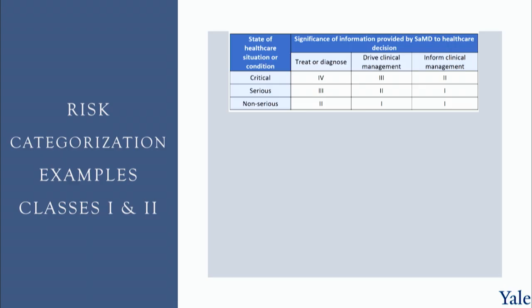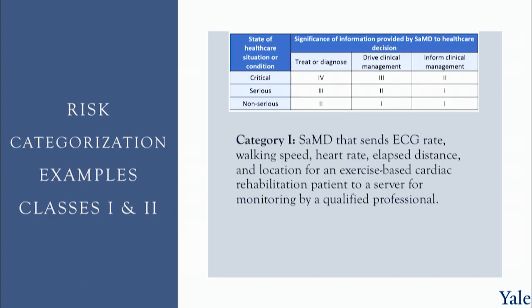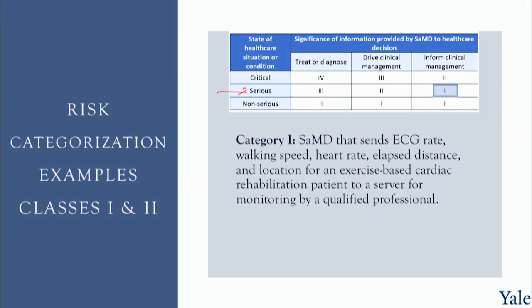Here is a Class 1 device example from the IMDRF documentation: software that sends ECG rate, walking speed, heart rate, elapsed distance, and location for an exercise-based cardiac rehabilitation patient to a server for monitoring by qualified professionals. We have a sensor, get measurements of what the patient is doing, and send them out. While the patient's cardiac condition is serious, the software is only informing clinical management — used together with lots of other information to ultimately make decisions.